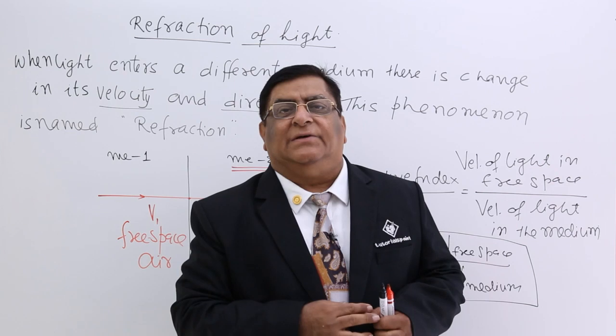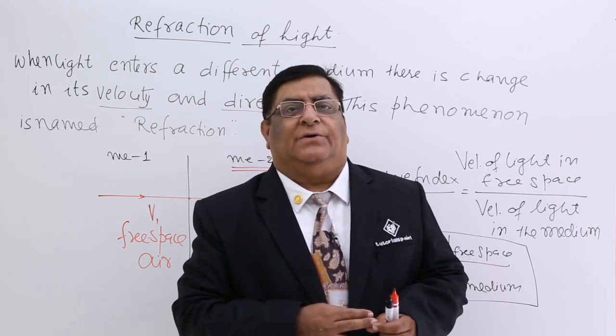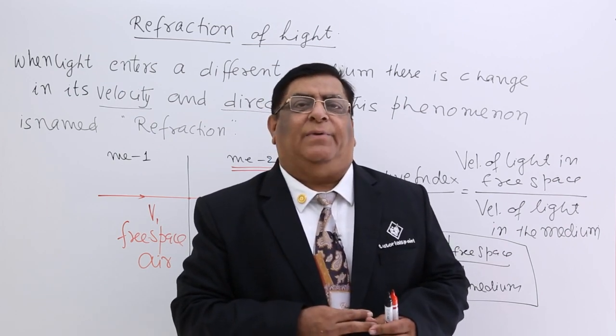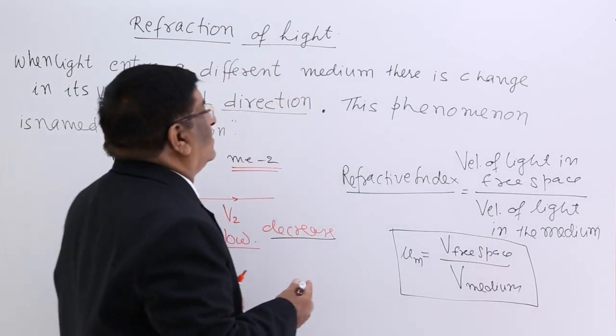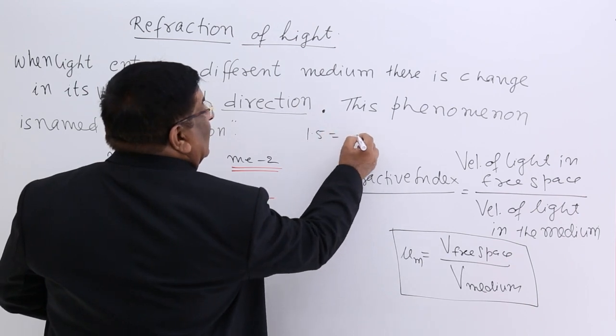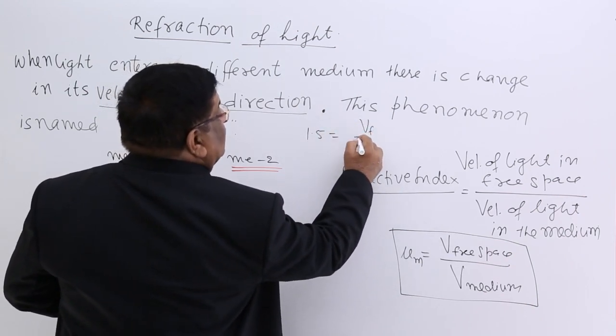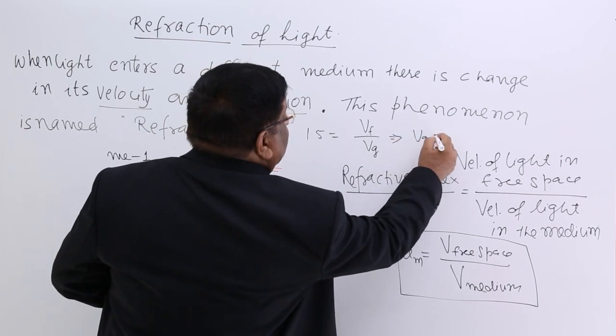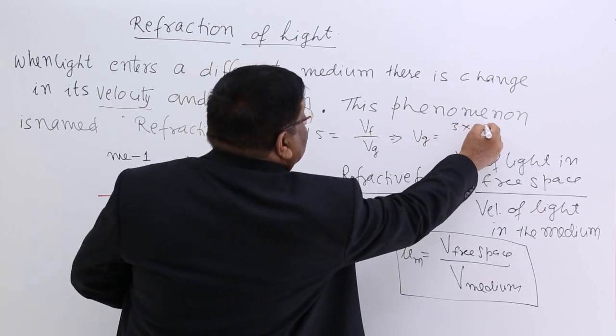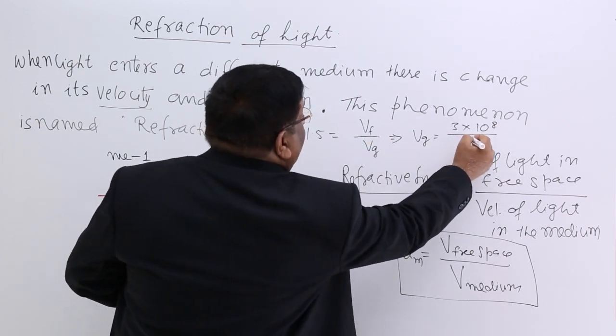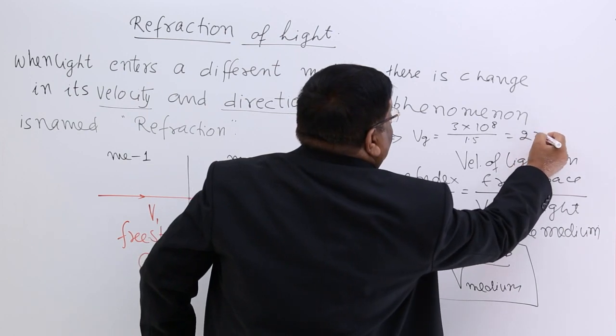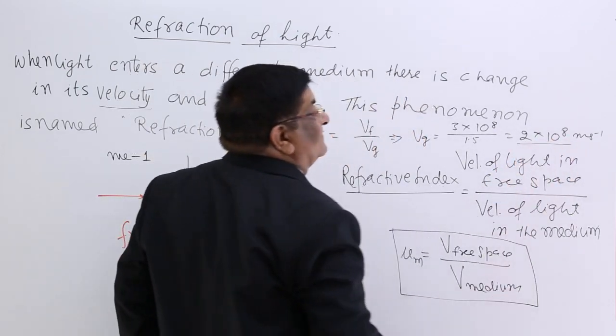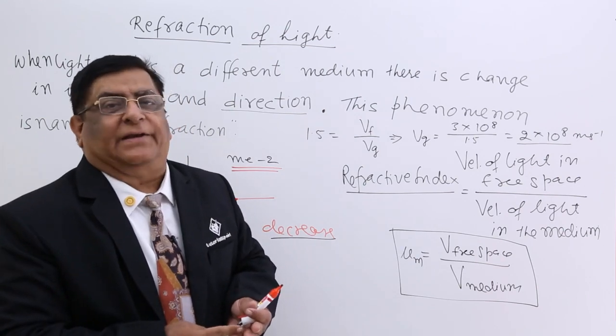And whenever it enters a medium, the velocity will decrease. Now if I tell you the refractive index of glass is 1.5, can you tell me what is the velocity in glass? So the answer is 1.5 is the refractive index. Velocity in free space divided by velocity in glass. So velocity in glass is velocity in free space, 3 into 10 to the power 8 meter per second, divided by 1.5. So this is equal to 2 into 10 to the power 8 meter per second. This is velocity of light in glass. So this is refractive index.